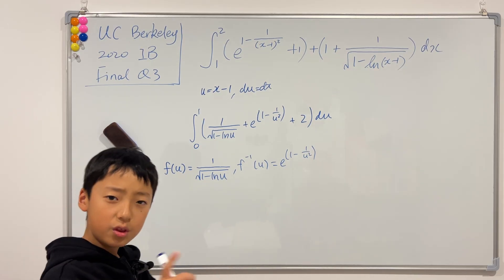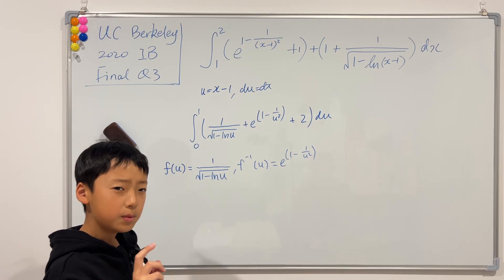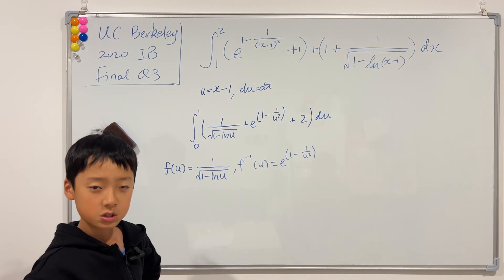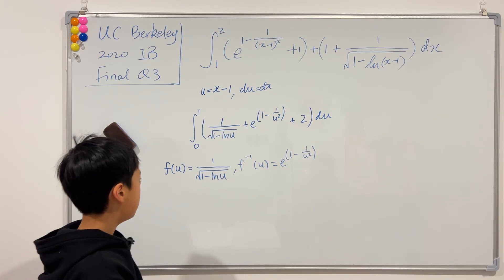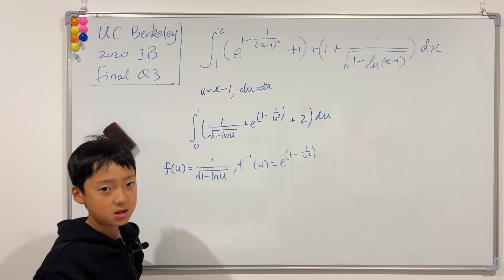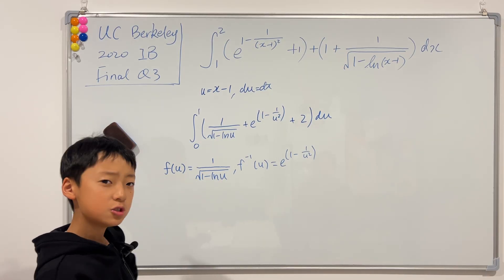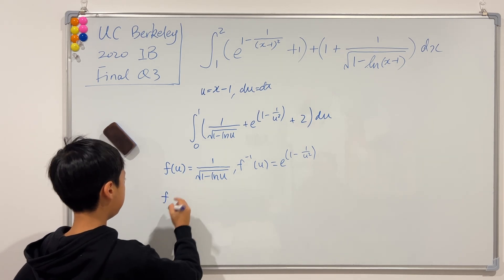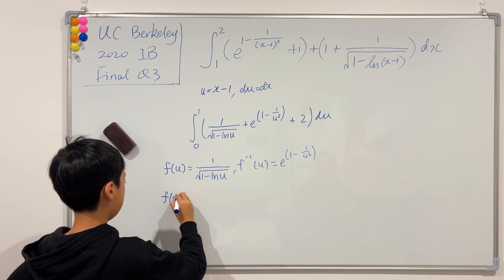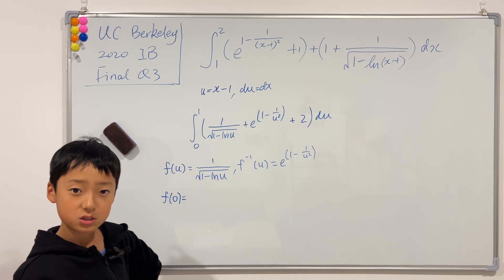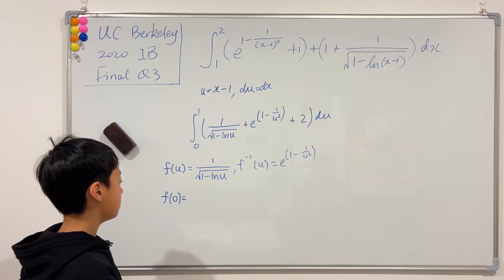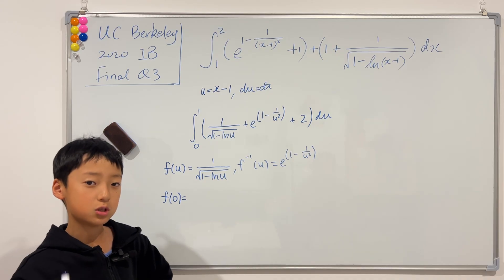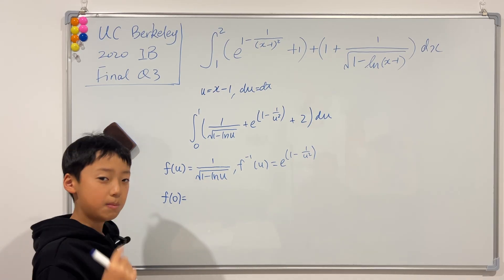But we still have one thing missing. Remember, in that formula we had the first bounds which is a to b, 0 to 1, sure. But the second bounds was from f(a) to f(b). So don't we first need to figure out f(a) and f(b)? Yes. So we need to figure out f(a), which is 0. This is equal to, well, you might notice a slight bug because ln of 0 is negative infinity, so we're going to have to do it the old-fashioned way. So we have to use limits.